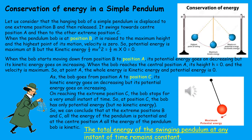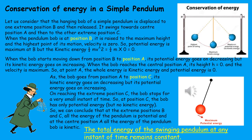When the bob goes from position A to position C, its kinetic energy goes on decreasing because it is going against gravity, so velocity is decreasing, which in turn decreases kinetic energy. But its potential energy goes on increasing because height is increasing. On reaching the extreme position C, the bob stops for a very small instant of time. So at position C, the bob has only potential energy and no kinetic energy. Thus we can conclude that at the extreme positions B and C, all the energy of the pendulum is potential, and at the center position A, all the energy is kinetic. The total energy of the swinging pendulum at any instant of time remains constant.